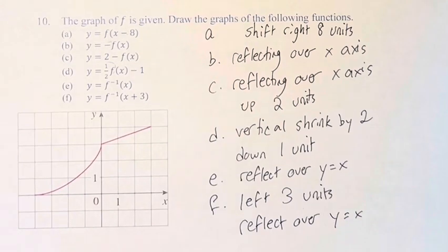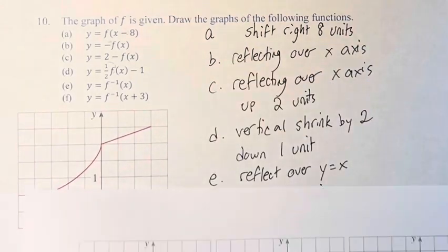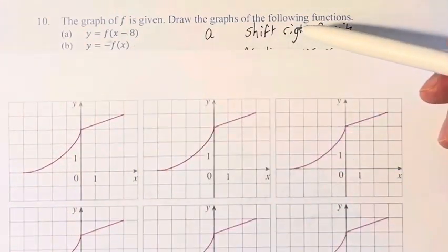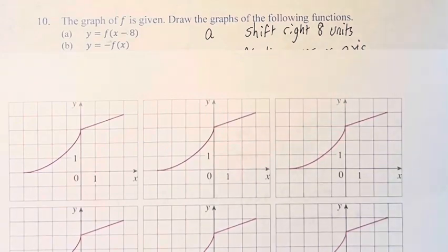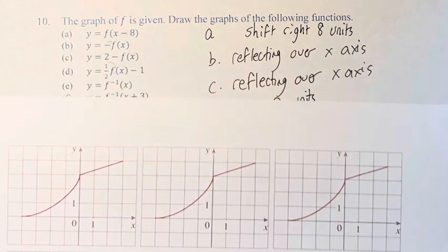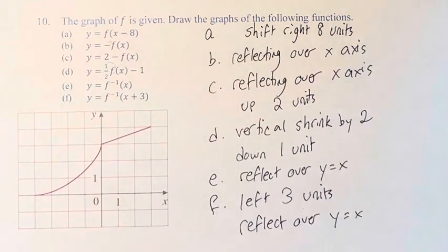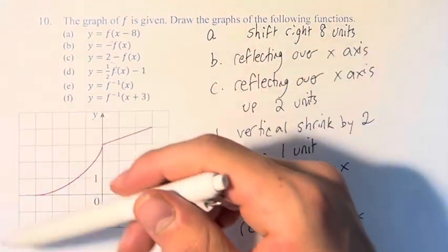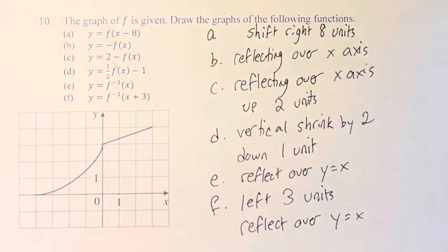Now we're going to draw these. Starting with y equals f(x-8), we have to shift to the right 8 units. I'm actually going to do that one on this main page, because they've given us this tiny graph and then asked us to move 8 units to the right.